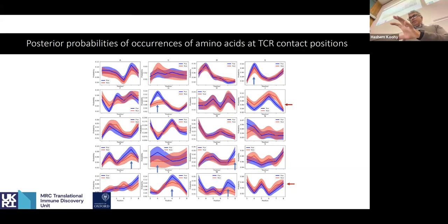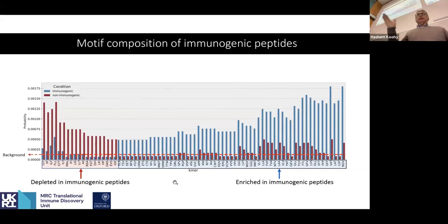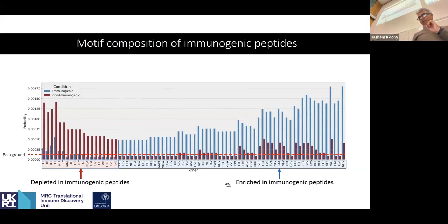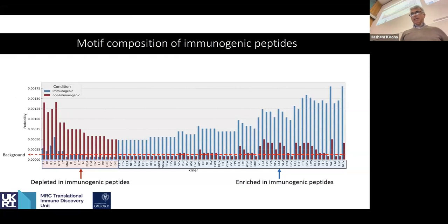We then expanded this from looking at individual amino acids and asked: what is the role or enrichment of short peptide motifs in TCR contact positions among immunogenic versus non-immunogenic peptides? Using a Bayesian model, we found short motifs — showing you trimers — enriched in immunogenic peptides, and other short k-mers or trimers depleted in immunogenic peptides. This is suggestive that sequence composition is a factor in making immunogenic versus non-immunogenic peptides.